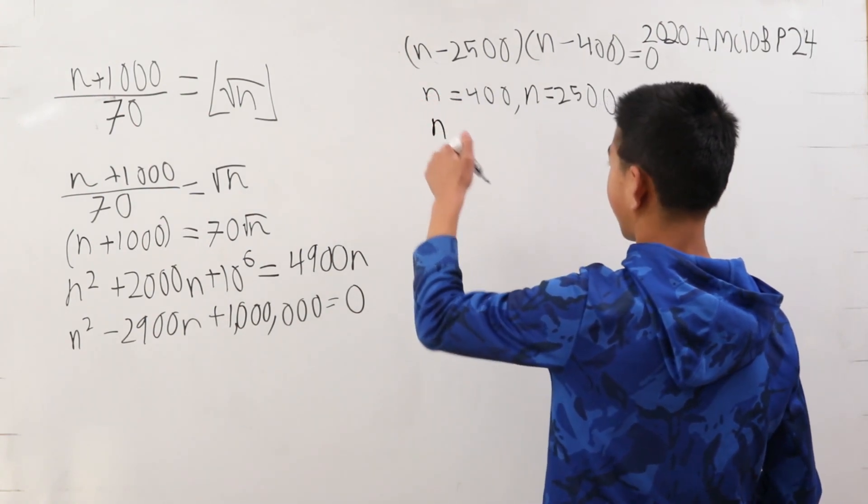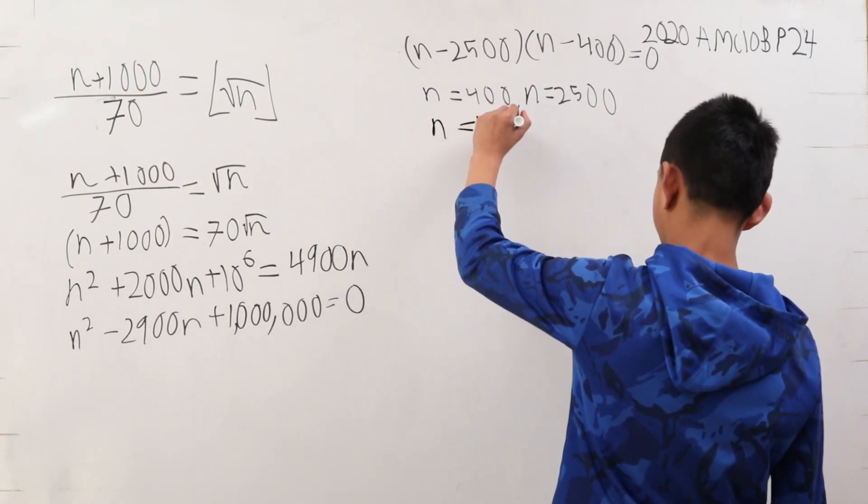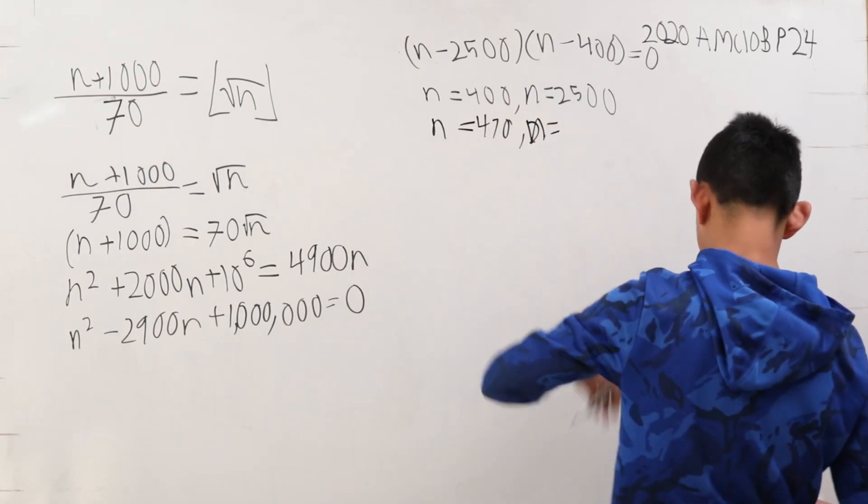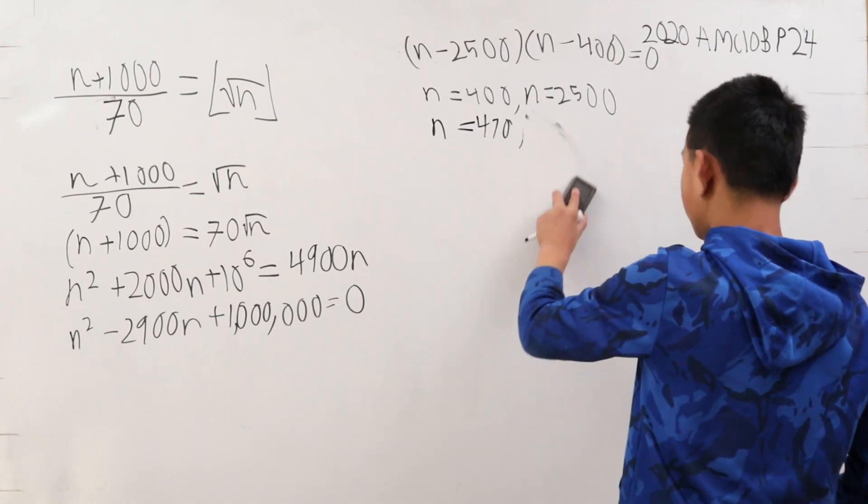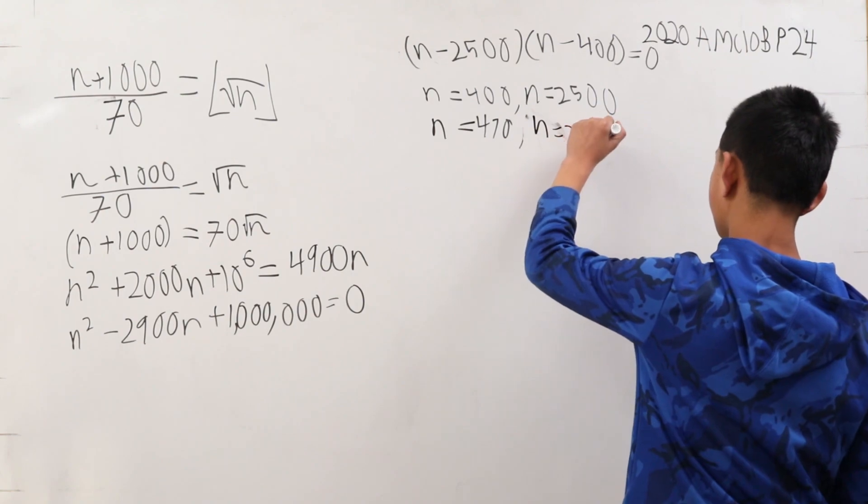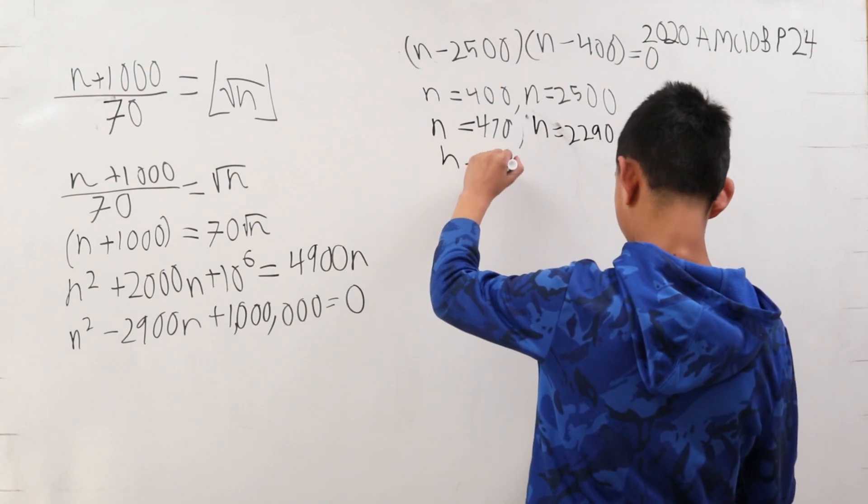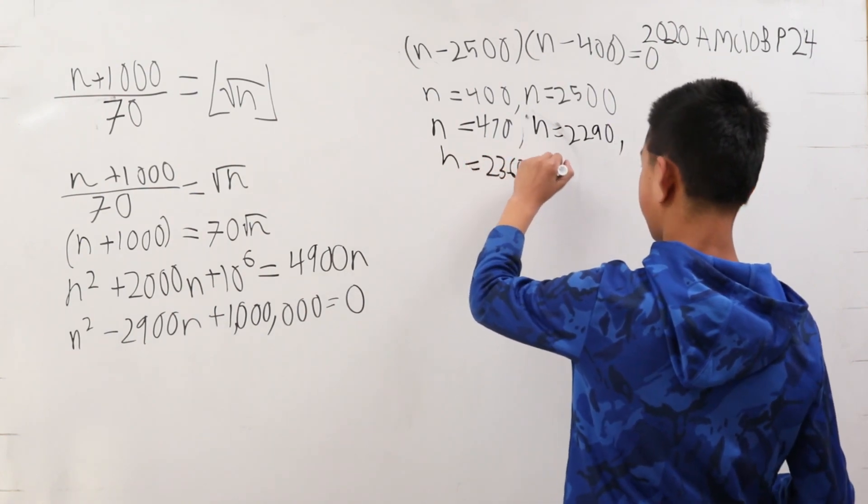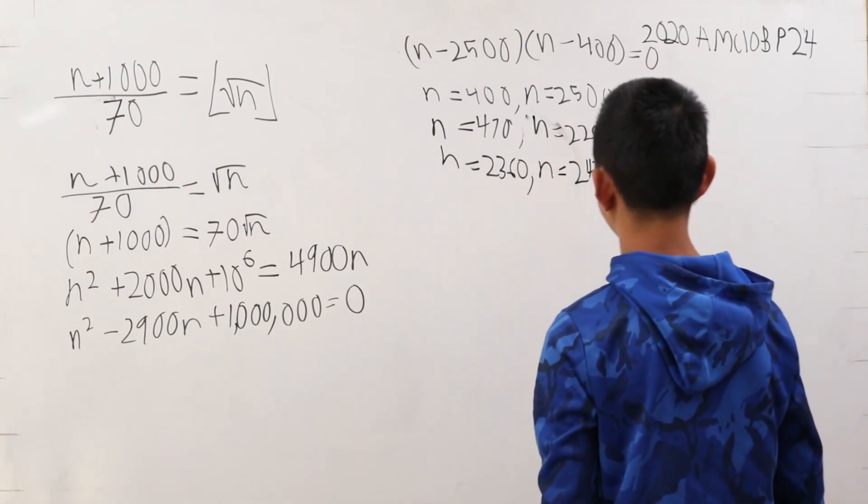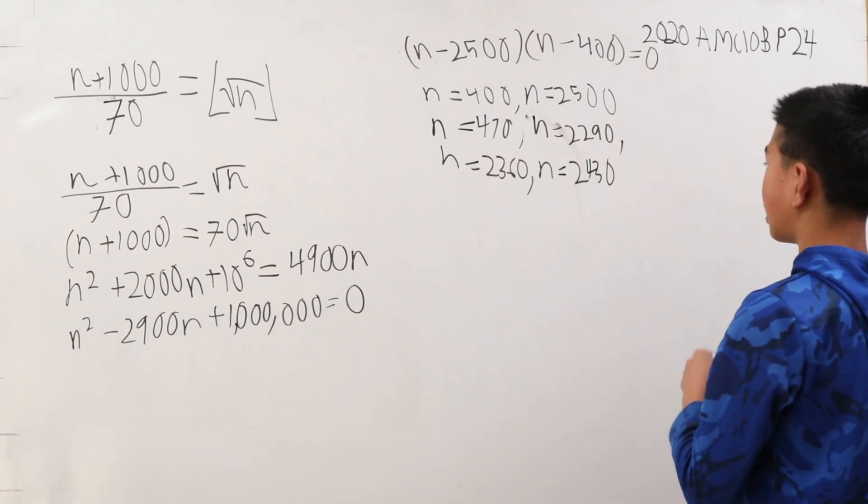After testing all these values, we get n is 470. There's n is equal to 2,290, n is equal to 2,360, n is equal to 2,430, and n is equal to 2,500. You're just subtracting increments of 70, since they're already divisible by 70.